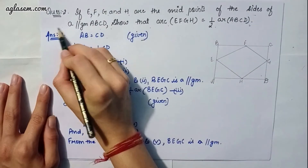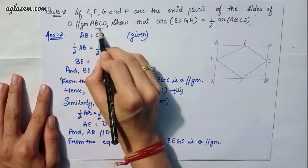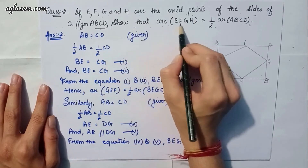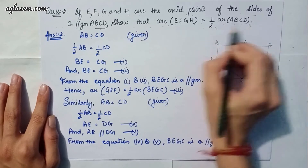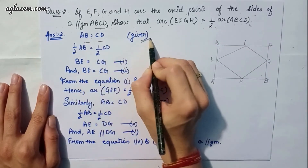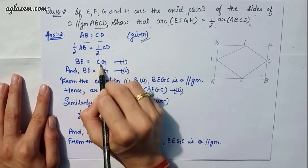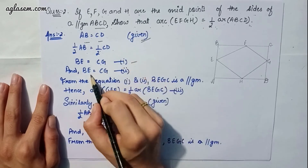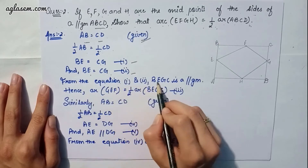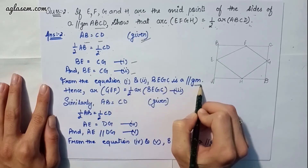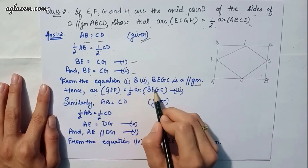Question number 2 says: if E, F, G, and H are the midpoints of the sides of parallelogram ABCD, we have to show that area EFGH is equal to half of area ABCD. Since AB equals CD, half of AB equals half of CD, so BE equals CG — equation 1 — and BE equals CG — equation 2. From equations 1 and 2, BEGC is a parallelogram. Therefore, area of triangle GEF equals half of area BEGC, which is equation 3.